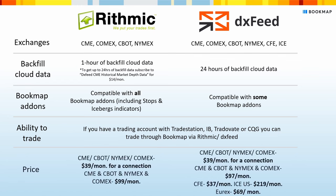For the last category, we'll cover the price. Starting with Rithmic: individual connections to CME, CBOT, NYMEX, or COMEX cost $39 per month for each connection, and the CME bundle that includes all four exchanges costs $99 per month. With DXFeed, individual connections to CME, CBOT, NYMEX, or COMEX also cost $39 per month per connection, and the CME bundle of the four exchanges costs $97 per month.